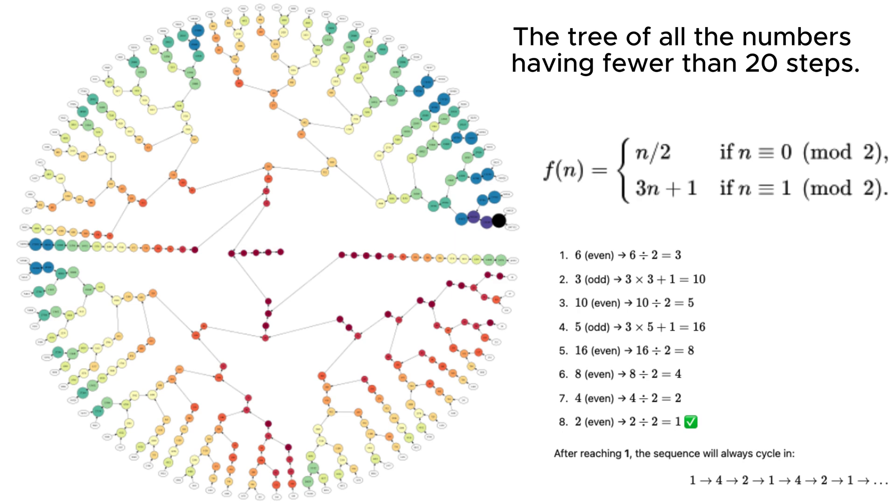The Collatz conjecture exemplifies how deceptively simple rules can produce remarkably complex behavior, a phenomenon that appears throughout nature, from weather patterns to population growth. This study has influenced computer science, particularly in understanding algorithmic behavior and computational limits.